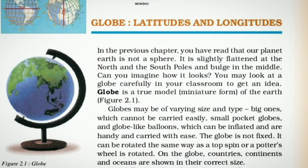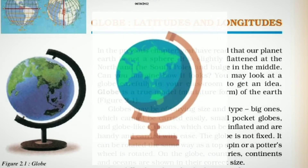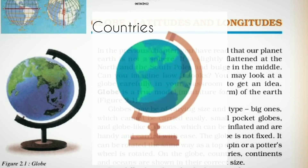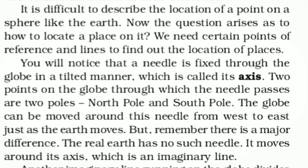The globe is not fixed. It can be rotated the same way as a top spin or a potter's wheel is rotated. On the globe, countries, continents and oceans are shown in their correct size. We need certain points of reference and lines to find out the location of places, because it is difficult to describe the location of a point on a sphere like the Earth.